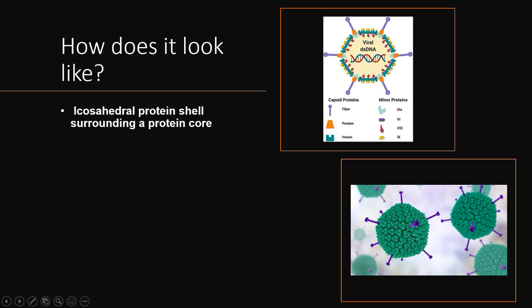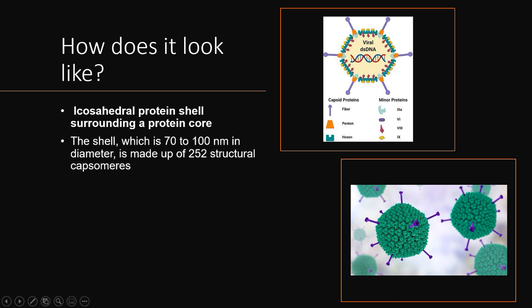The virus looks like an icosahedral protein shell surrounded by a protein core. There are major and minor proteins present. Capsid proteins include fiber, penton, and hexon proteins, and there are minor proteins namely 3a, 6, 8, and 9. The shell is normally 70 to 100 nanometers in diameter and is made up of 252 structural capsomeres.